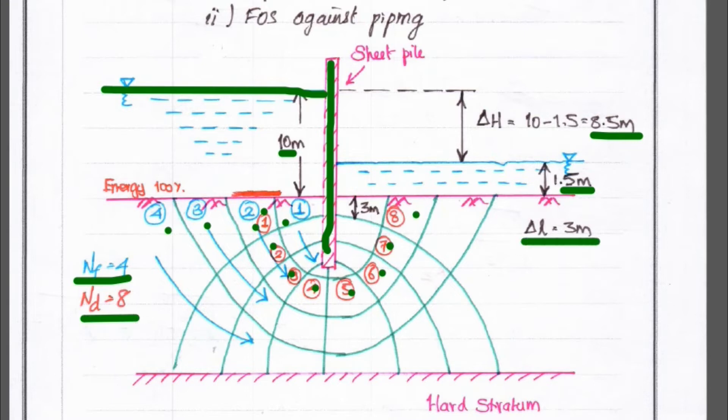Okay. So, then change in length. So, del l is equal to 3 meter. So, then hard strata is over here and ground surface is over here. So, this is a given diagram.